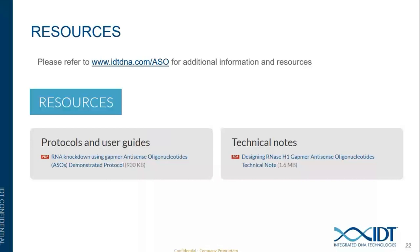Regarding dye-labeled ASOs: IDT offers a wide variety of fluorophore options. Data examining several Cy dyes and Atto dyes showed that the ASO still functioned quite well from a potency standpoint, with less negative impact than expected, and placement on the 5' or 3' end was equally effective. This data will be available on the IDT ASO webpage soon. Contact IDT for guidance on specific dye choice, sequence, or chemical modification questions.